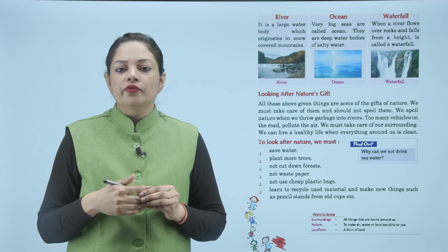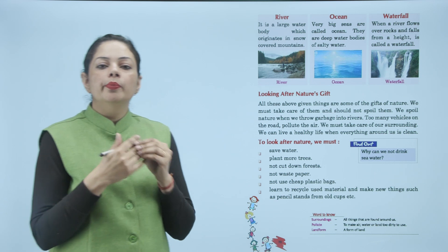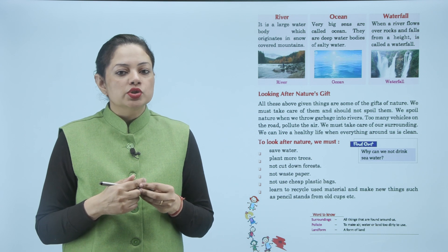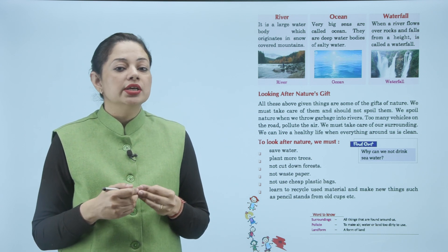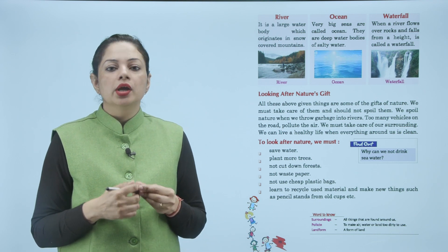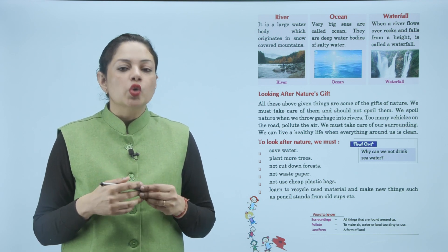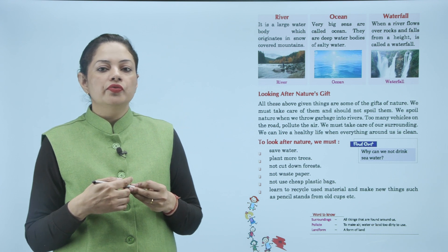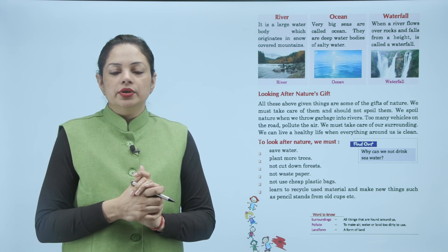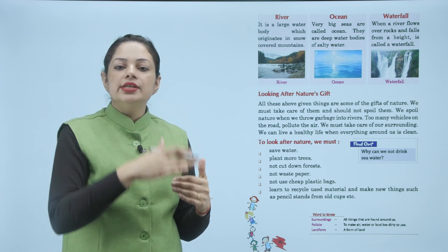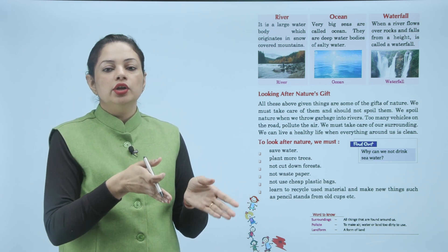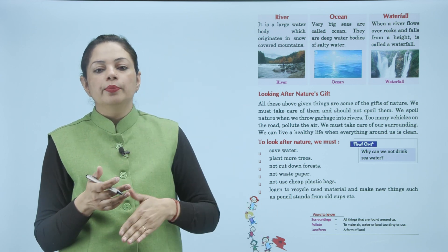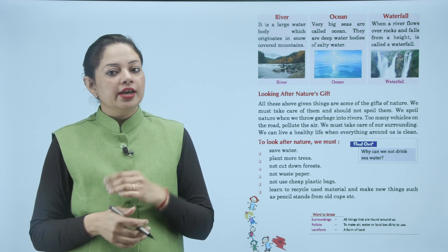Next is ocean — very big seas. बहुत बड़े बड़े समुंदर जो होते हैं उनको ocean कहते हैं। They are deep water bodies of salty water — इनका पानी बहुत ज़्यादा खारा होता है। Next is waterfall — when a river flows over rocks and falls from a height, it is called a waterfall. जब कोई river पहाड़ से height से नीचे गिरती है और बीच में rocks आ जाती हैं, तो पानी अलग-अलग जगह आ जाता है और एक beautiful view मिलता है जिसको waterfall कहते हैं।